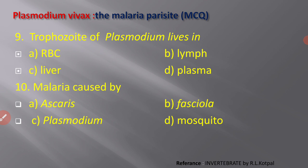Next MCQ: trophozoite of Plasmodium lives in — trophozoite is another stage found in human beings. Options: A) RBC, B) lymph, C) liver, D) plasma. The trophozoite, which is also the feeding stage, is found particularly in the RBC of man.